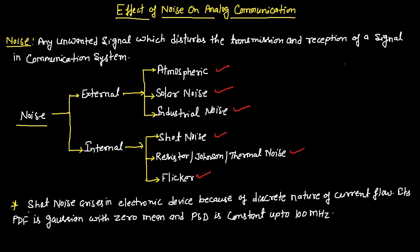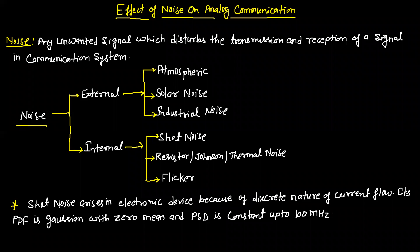Shot noise arises in electronic devices because of the discrete nature of current flow. Its PDF is Gaussian with zero mean, and its power spectral density (PSD) is constant up to 100 MHz.